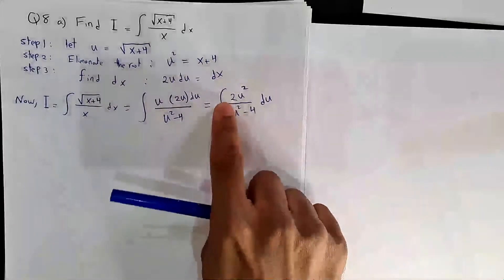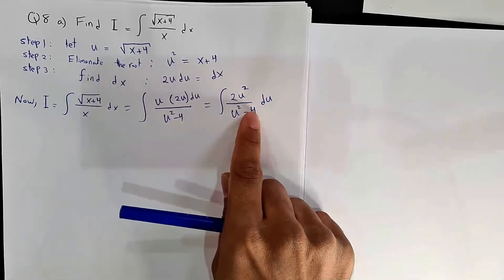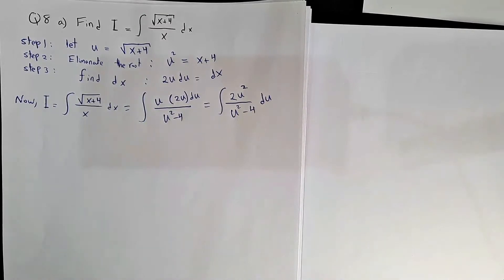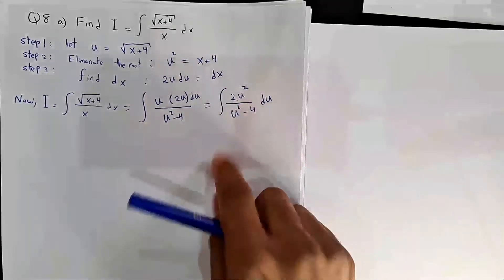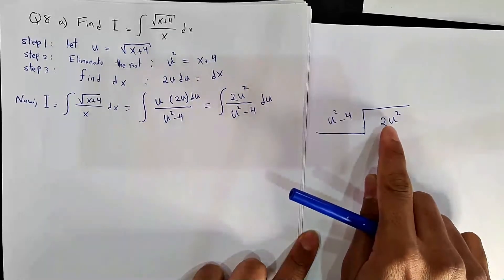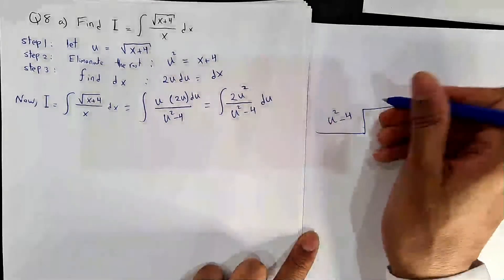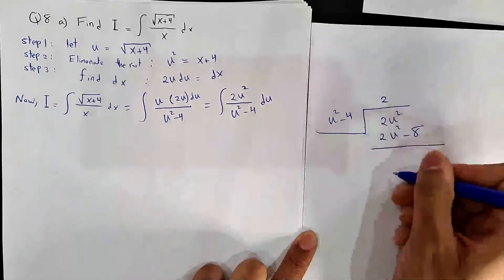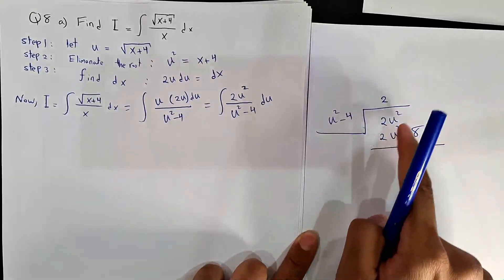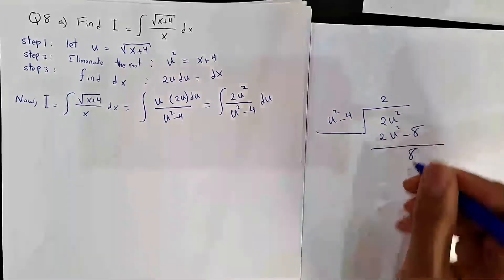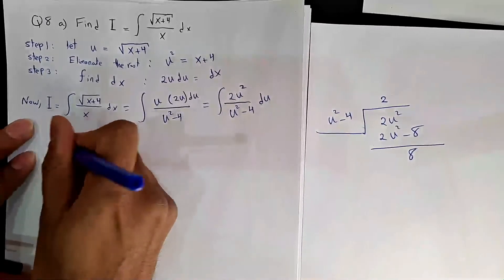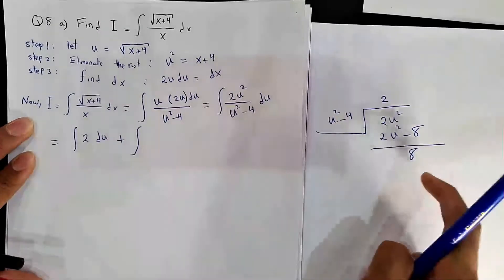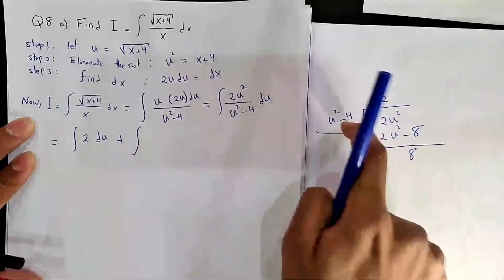Now simplify to get 2u² over (u² − 4). To proceed, the first step is to use long division because the numerator and denominator are of the same degree. Divide 2u² by u² to get 2, multiply to get 2u² − 8, subtract to get remainder 8. So this integral is the integral of 2 plus the integral of the remainder over the divisor.